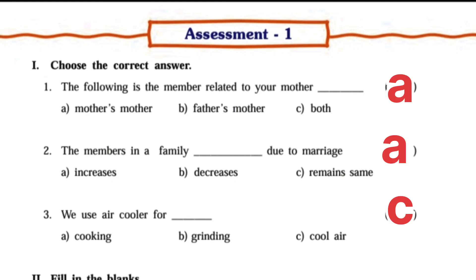Next — choose the correct answer, Assessment 1. The following is the member related to your mother — Answer A: Mother's mother. Second one: The members in a family dash due to marriage — A: Increases. Third one: We use air cooler for dash — cool air.